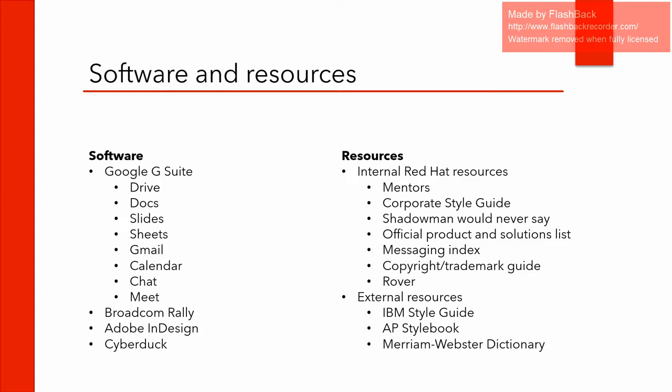The resources that we use are mostly internal. Red Hat has a style guide — they have a lot of documents that show us exactly how everything should look, what words we should use, and what we shouldn't use. We also have two mentors who help us with any questions, no matter how basic. For external resources, we use the IBM Style Guide, AP Style Book, and the Merriam-Webster Dictionary.